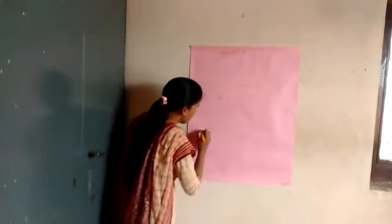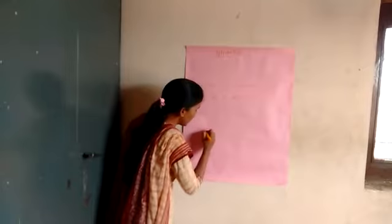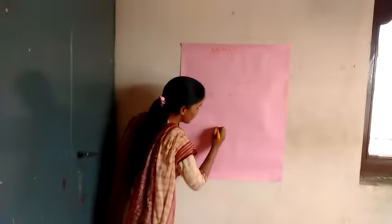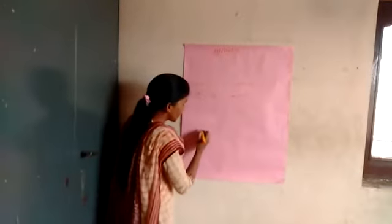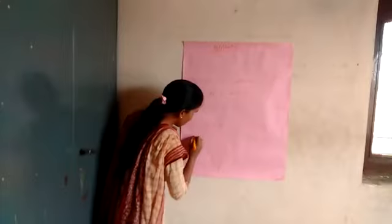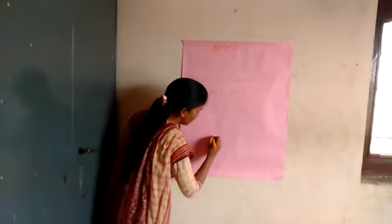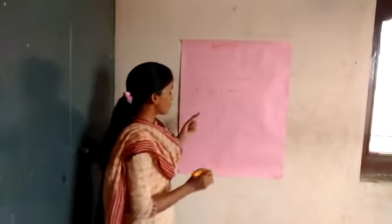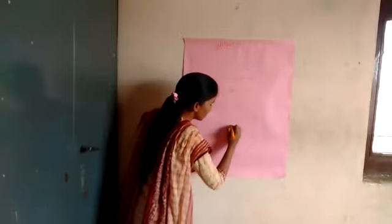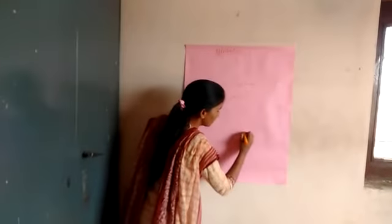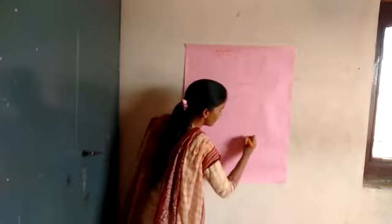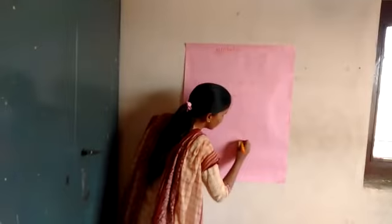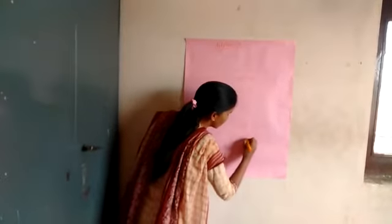For example, if A indicates the Literate people, then Alpha indicates the Illiterate people. And if B represents males, then Beta represents females.